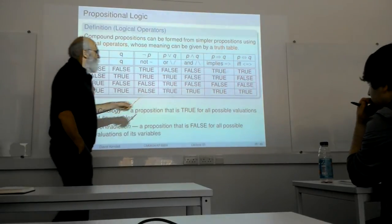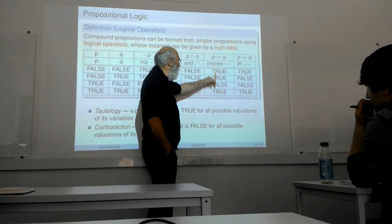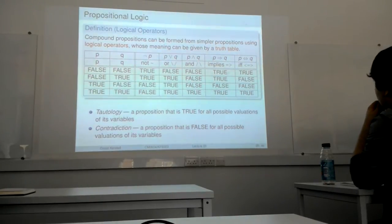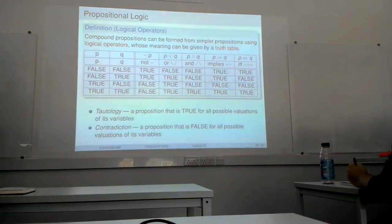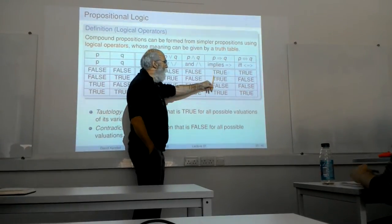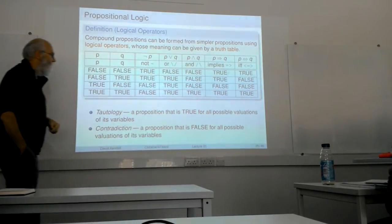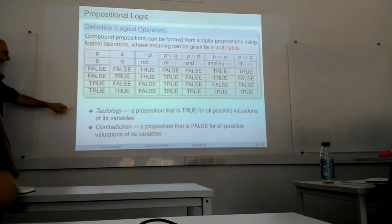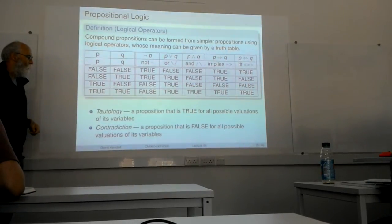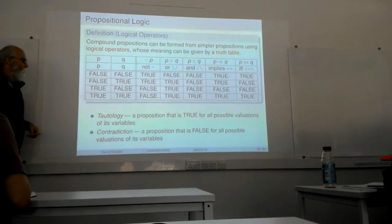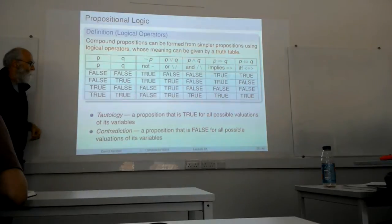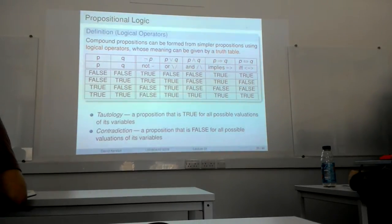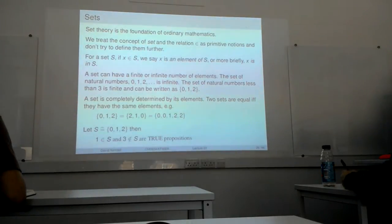Throughout your time on this module, implies is the operator that will cause you the most problems. Try to avoid that by making sure you're familiar with that column in the truth table. A tautology is a proposition that's true for all possible valuations of its variables. A contradiction is a proposition that's false for all possible valuations. The exercises in the labs later in the week will give you practice with that. That was propositional logic — I'm also going to say something about predicate logic, but we'll look at sets first because that helps with the explanation.